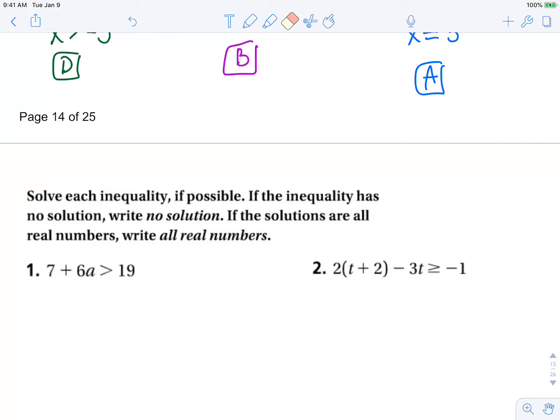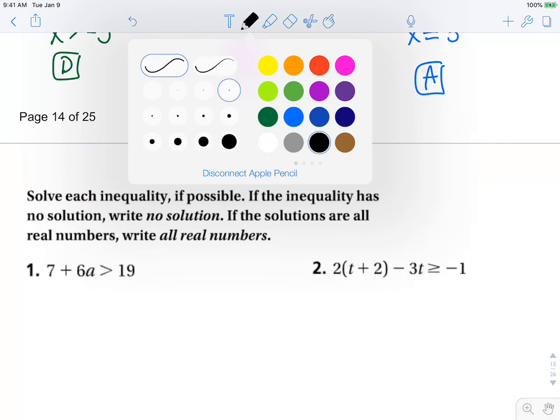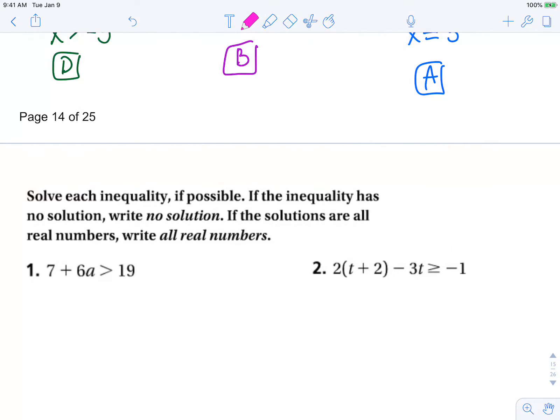Solve each inequality if possible. If the inequality has no solution, write 'no solution'. If the solutions are all real numbers, write 'all real numbers'. Here, number one, we have a two-step inequality. Subtract seven from both sides first.